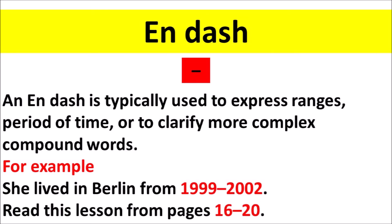En dash: an en dash is typically used to express ranges, periods of time, or to clarify more complex compound words. For example: 'She lived in Berlin from 1999–2002.' 'Read this lesson from pages 16–20.'